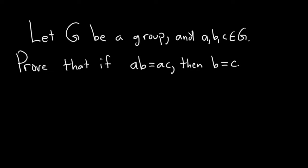Let G be a group and a, b, c elements in G. Prove that if ab is equal to ac, then b is equal to c.